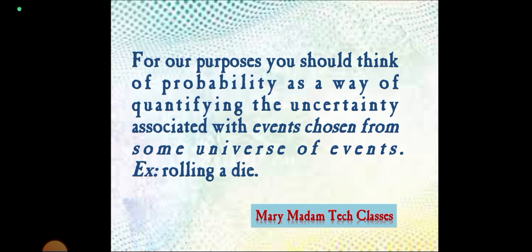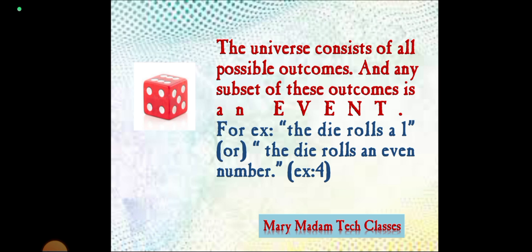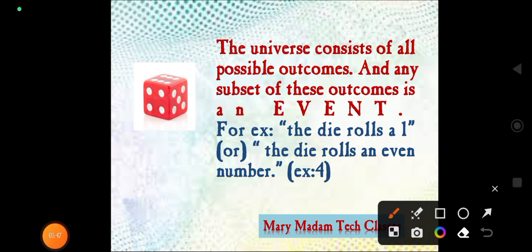For example, rolling a die. The universe consists of all possible outcomes, and any subset of these outcomes is an event.